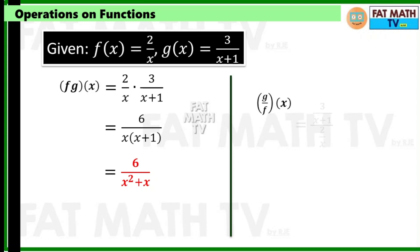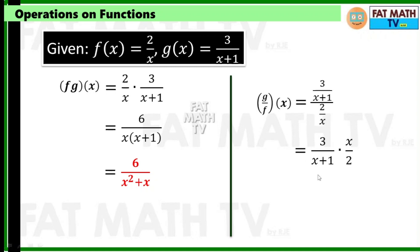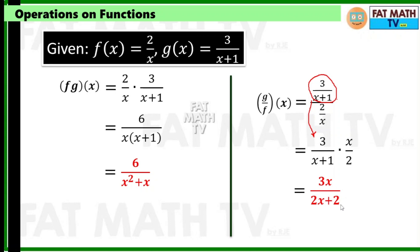For g over f of x: g is 3 over (x plus 1) divided by f which is 2 over x. When dividing fractions, copy the numerator fraction and multiply by the reciprocal of the denominator. So we have 3 over (x+1) times x over 2. Multiply numerators: 3 times x is 3x. Multiply denominators: (x+1) times 2 gives 2x plus 2. So g over f of x is 3x over (2x plus 2).